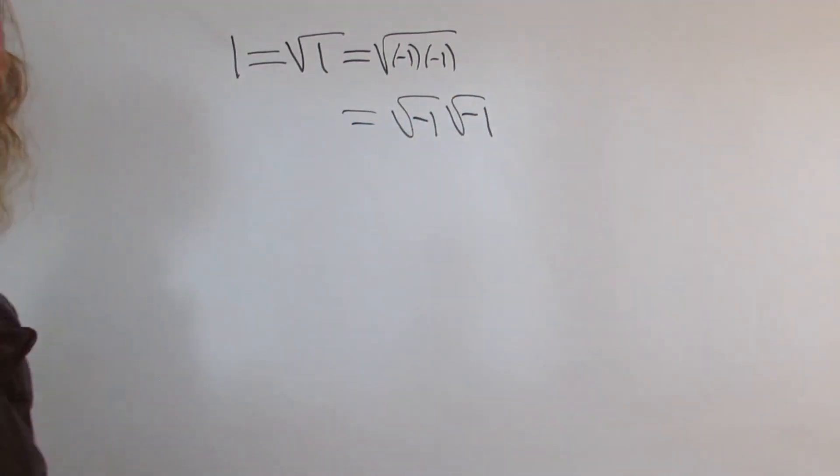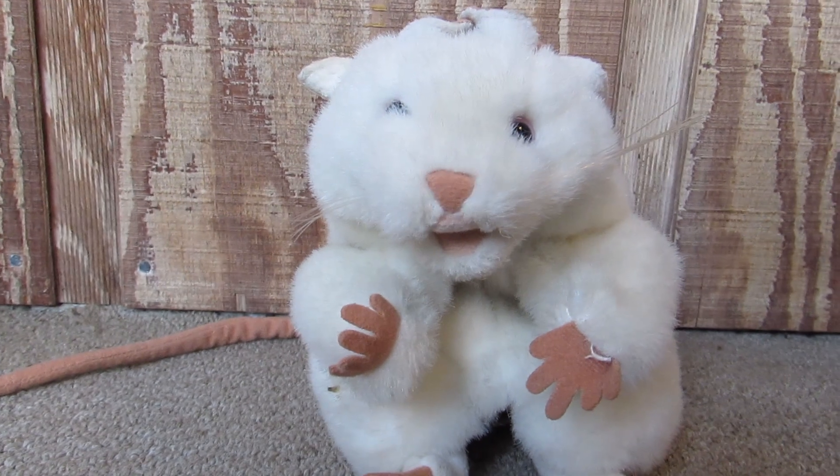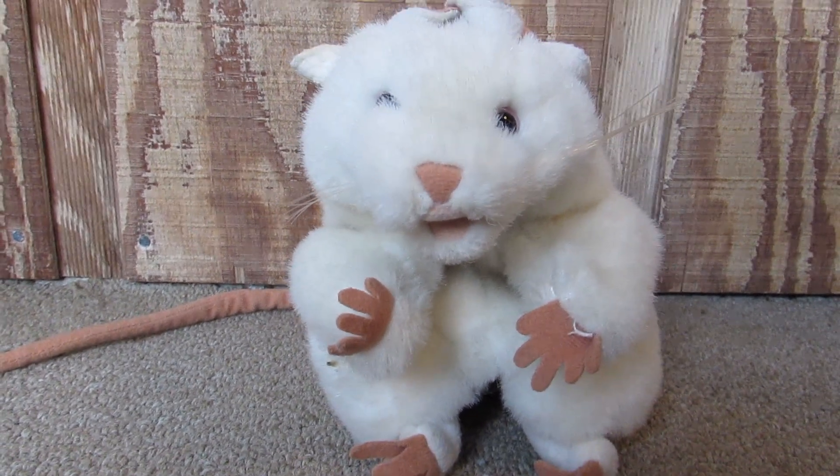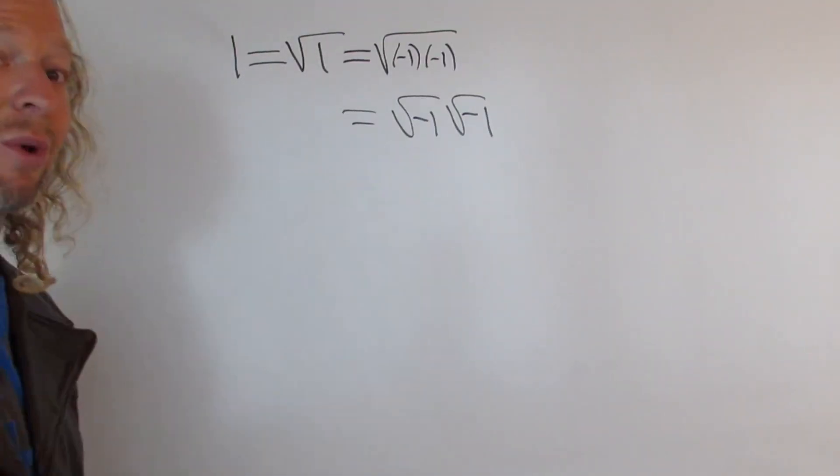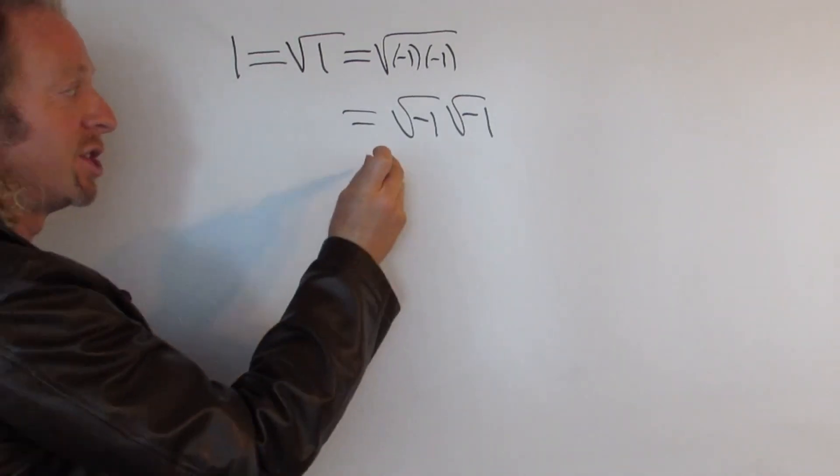But then if you know some math... He doesn't really know math. He just thinks he does. The square root of negative 1 is i. It's the imaginary unit.